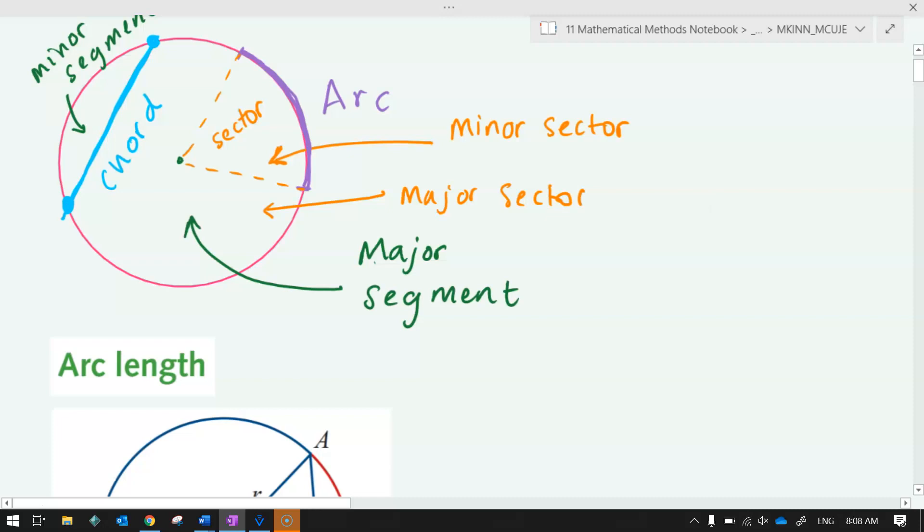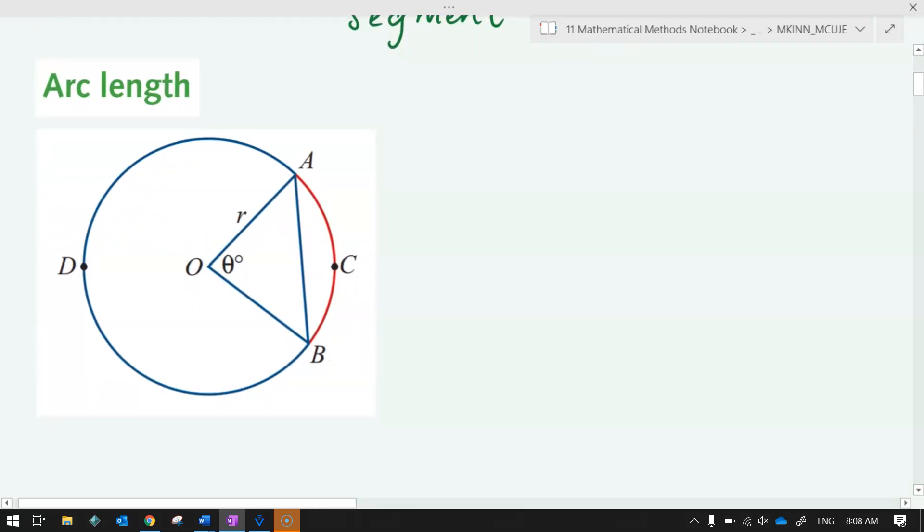Alright, there are a few different rules. You've probably done some of these before. Some of them you may not have done. We're going to go through them anyway. An arc length. So an arc is part of the circumference of a circle. Given that it's part of the circumference, I imagine that we would calculate the length of the arc by using a fraction of the circumference of a circle. What's our rule for the circumference of a circle? 2 pi r. Listen to that. It's almost like you guys have done this before.